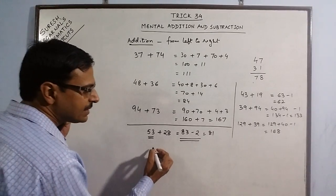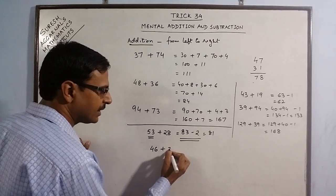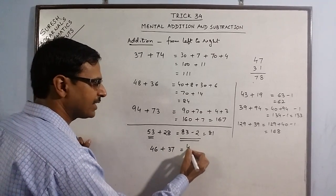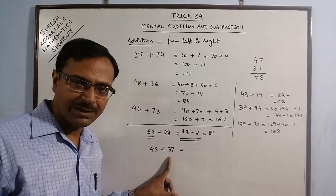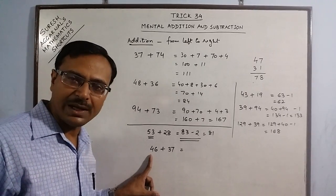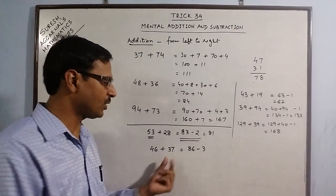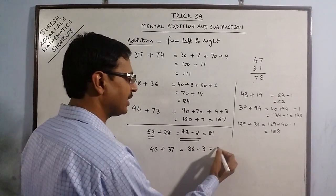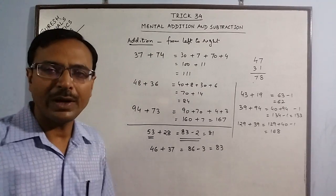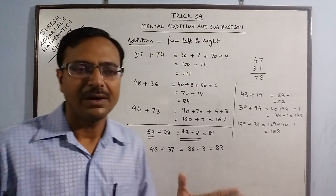Say we have 46 plus 37. Now I know that this is 37, which is close to 40. So I increase this by 40. 46 plus 40 is 86, and I reduce 3 because 37 is 3 less than 40. So your simple answer is 83. No addition done, no carry created, and you have arrived at the right answer.